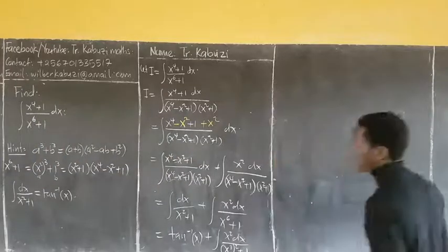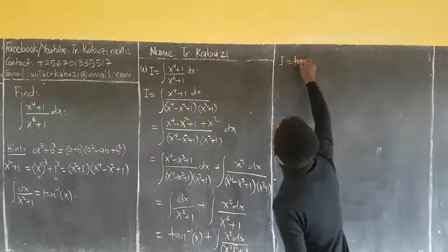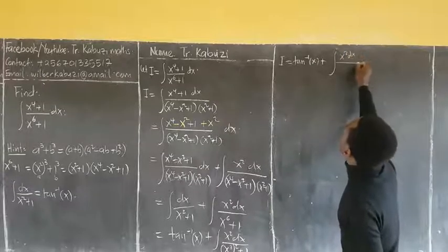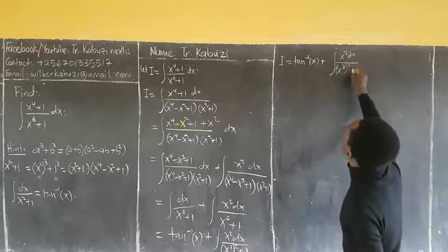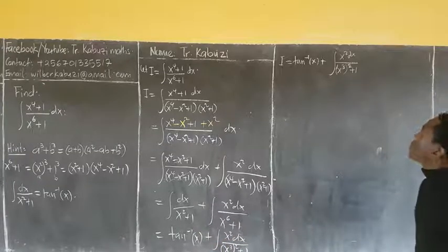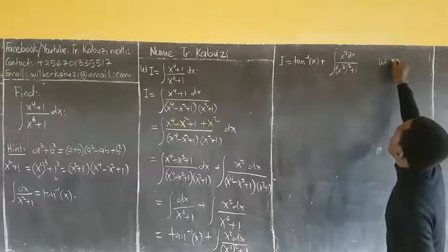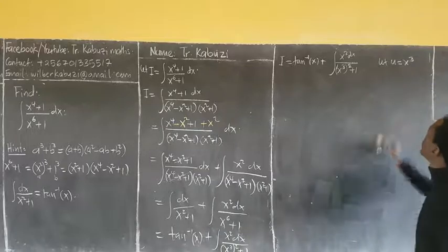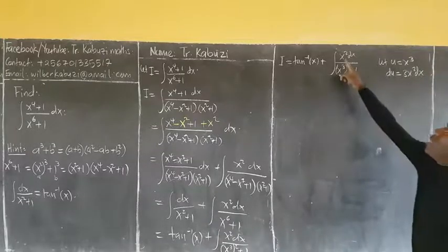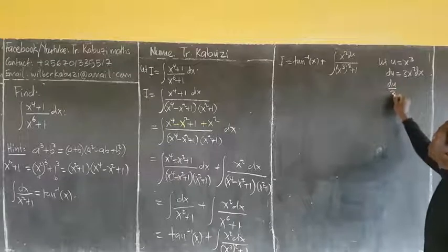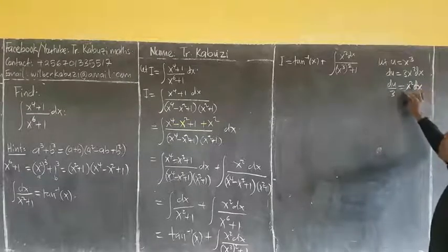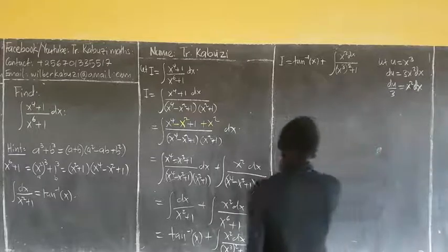So my integral I is arctan(x), plus the integral of x² dx over (x³)² + 1. Here the function is x³, so let u = x³. Then du equals 3x² dx, so x² dx equals du over 3.